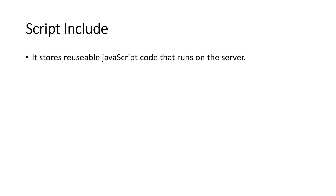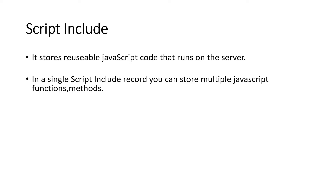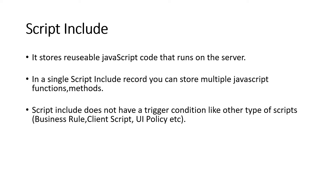In a single Script Include record — just like business rules and client scripts — you create a record in the Script Include form, and there you can store multiple JavaScript functions and methods. One very important difference: unlike business rules, client scripts, or UI policies, you do not need to mention a trigger condition in Script Include. There's no 'before/after/async' or 'on change/on form load' — Script Include doesn't work that way.